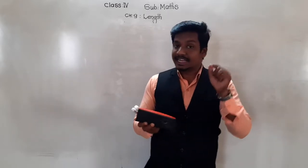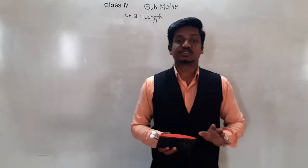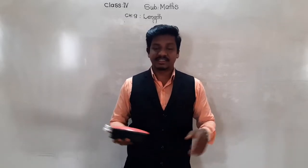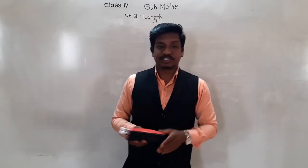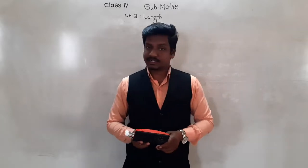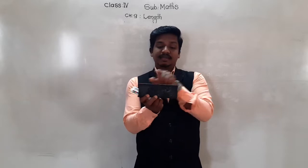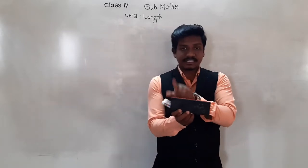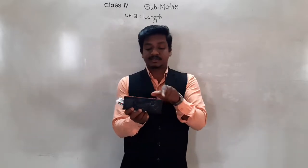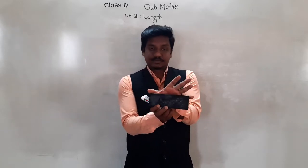The length of this duster can be measured using various instruments like a ruler, measuring tape, or measuring rod. Length means the distance between the starting point and the ending point. Suppose this is the starting point and this is its ending point — the length of this duster is the distance between them.